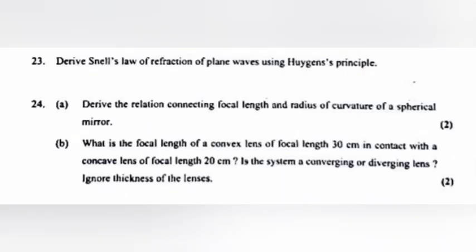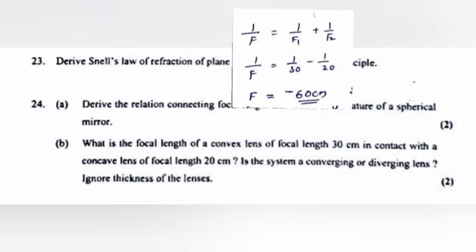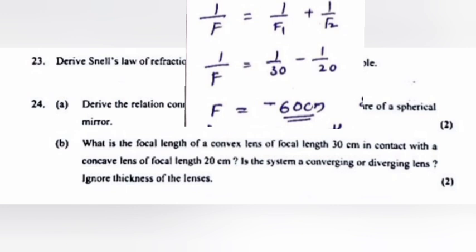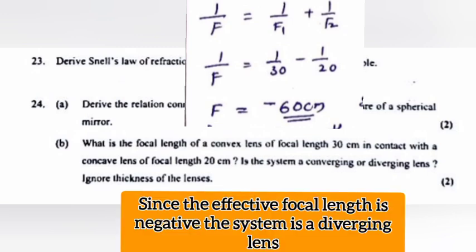Question 24b: What is the focal length of a convex lens of focal length 30 cm in contact with a concave lens of focal length 20 cm? Is the system converging or diverging? Answer: f1 = 30 cm, f2 = −20 cm. Using 1/f = 1/f1 + 1/f2 = 1/30 − 1/20, we get f = −60 cm. Since the effective focal length is negative, the system is a diverging lens.